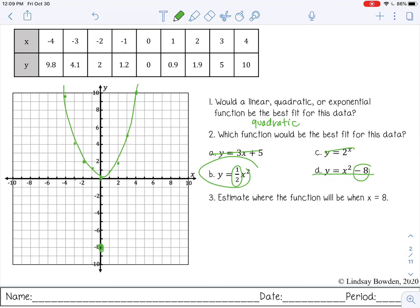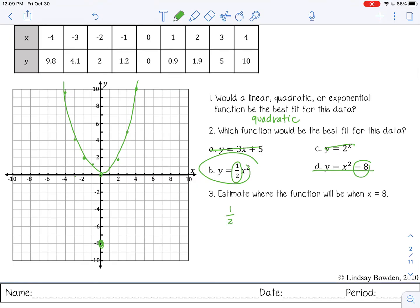All right, and then estimate where the function will be at x equals eight. So let's see, one half, eight squared. That would be half of 64, which is about 32.